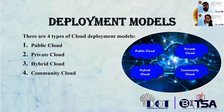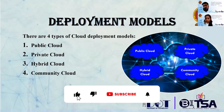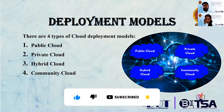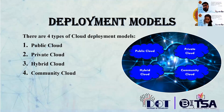The second is private cloud, which allows systems and services to be accessible within an organization. It offers increased security because of its private nature. Third is community cloud, which allows systems and services to be accessible within a group of organizations. The last one is hybrid cloud — it is a mixture of public and private cloud. Critical activities are performed using private cloud while non-critical activities are performed using public cloud.